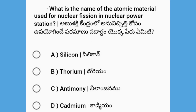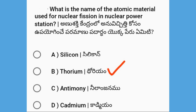Next, what is the name of the atomic material used for nuclear fusion in a nuclear power station? The options are silicon, thorium, antimony, and cadmium. The answer is thorium — used in nuclear power plants.